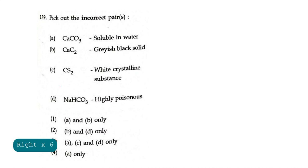Question 139: They have asked us to pick out the incorrect pairs. Option A: calcium carbonate is soluble in water. Option B: calcium carbide is greyish black solid. Option C: calcium disulfide CS2 is a white crystalline substance. Option D: sodium bicarbonate NaHCO3 is highly poisonous. They have given 2 or 3 answers and asked which one is incorrect. Calcium carbonate is soluble in water is absolutely wrong. It is insoluble in water.